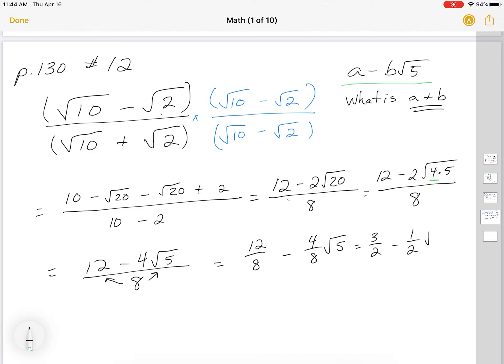And this will be minus 1 half root 5. So looking at our original, it says it's a minus b root 5. So a equals 3 halves, and b equals 1 half. So if I'm doing a plus b, they will be 3 halves plus 1 half, which is equal to 4 halves, which is equal to 2. So hopefully that helps, okay?